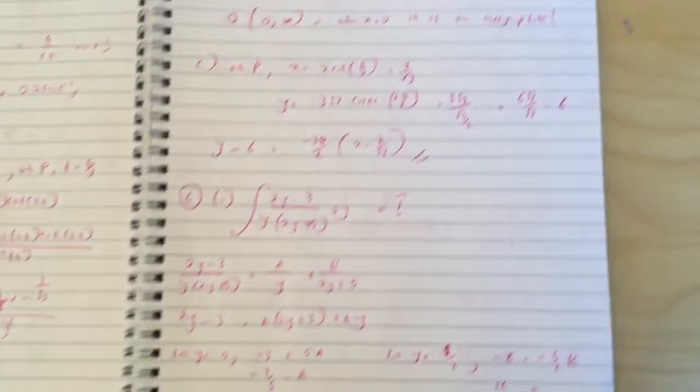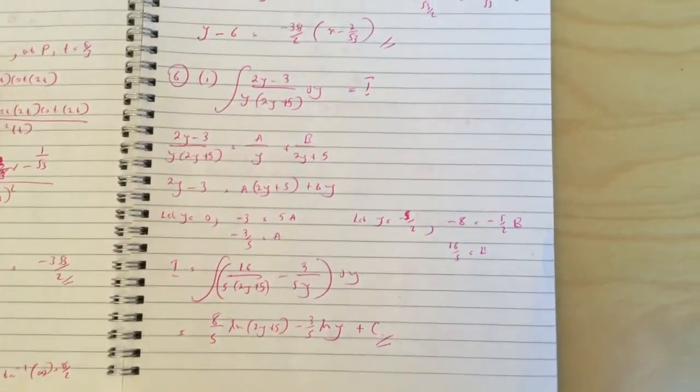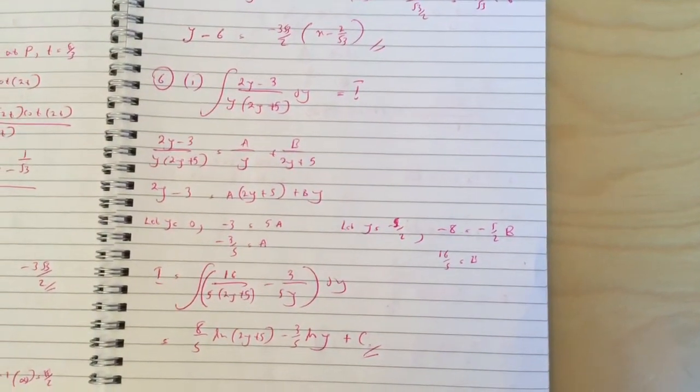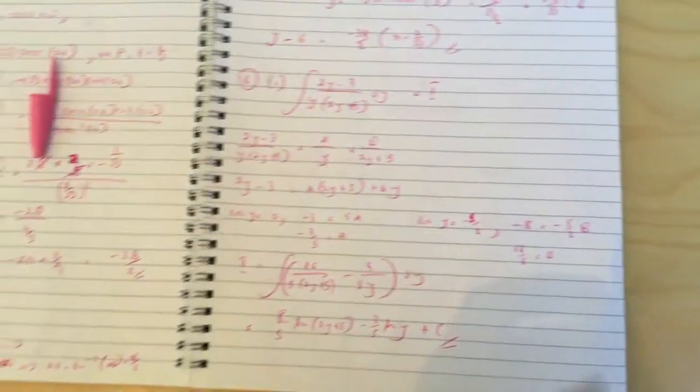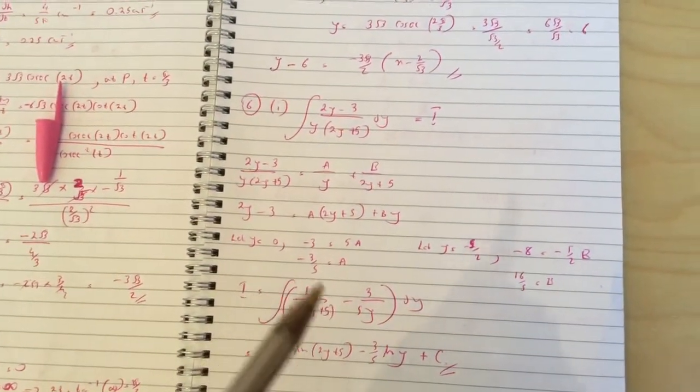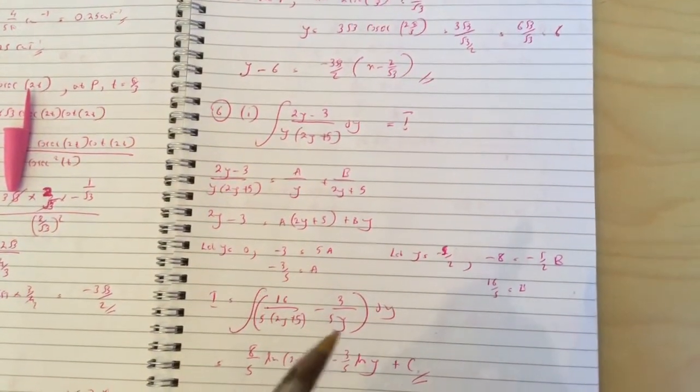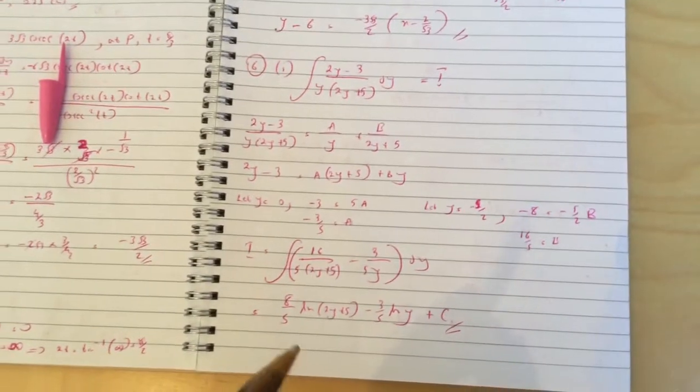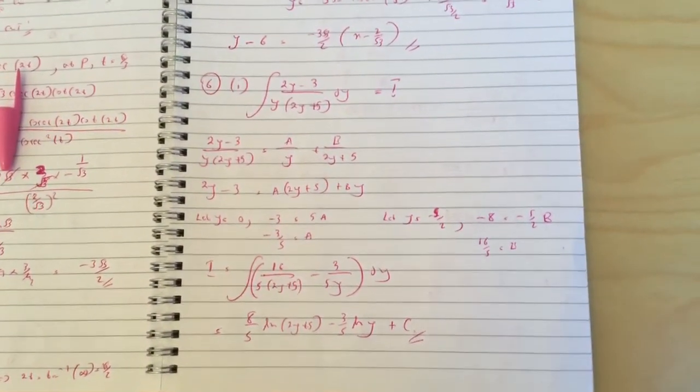Question 6 part i, use partial fractions to find a and b. In the question here I've written b first and a second because a is negative so I just wrote that - it doesn't matter which way around you write it. So you get 8 fifths ln 2y plus 5 minus 3 fifths ln y.